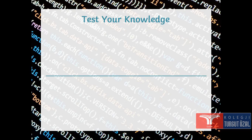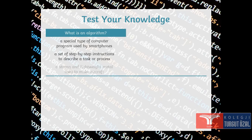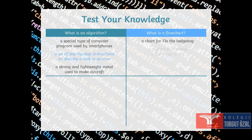Okay. Test your knowledge now. Here. What is an algorithm? A special type of computer program used by smartphone, a set of step-by-step instructions to describe the task or process, a strong and lightweight metal used to make aircraft. What is an algorithm? A set of step-by-step instructions to describe a task or a process.